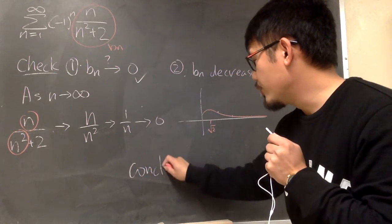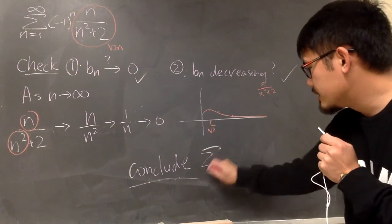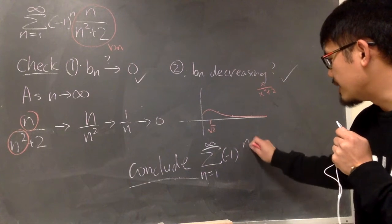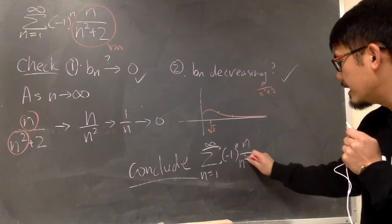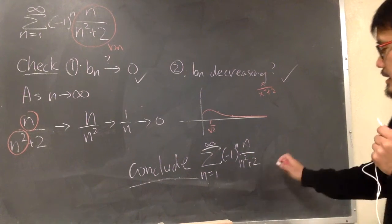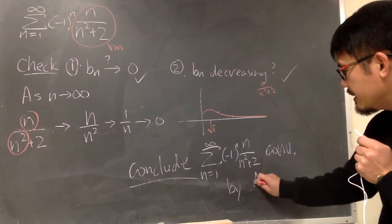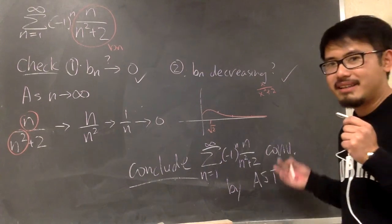So we can say that. Now we conclude. The original series sigma as n goes from 1 to infinity, negative 1 to the nth power times n over n squared plus 2, this right here, it converges by alternating series test AST. That is it.